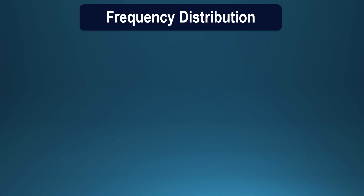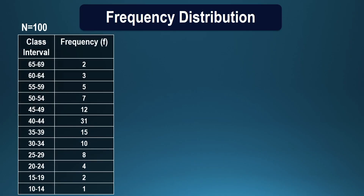One can prepare a frequency distribution, and that would require the calculation of a range, deciding the number of class intervals and the size of class interval, and then trying to determine the frequency which falls in each class interval. You can prepare a frequency distribution and then transform this frequency distribution into a graphical representation.